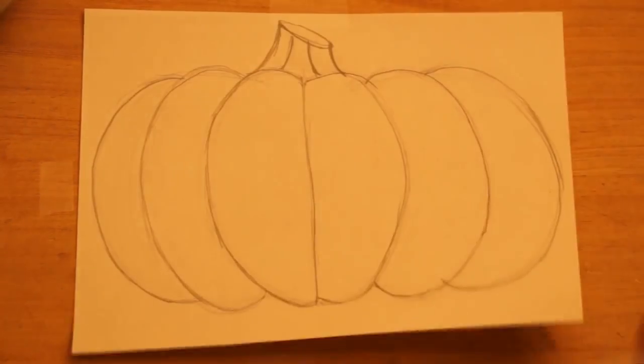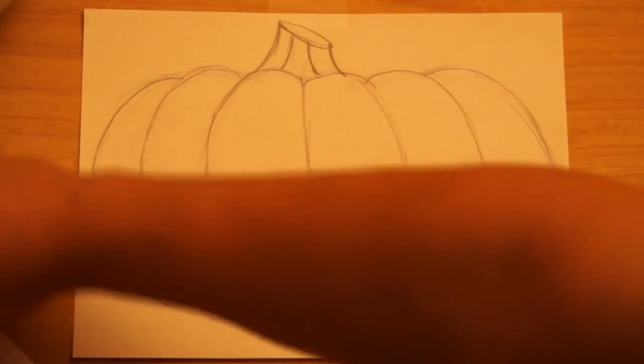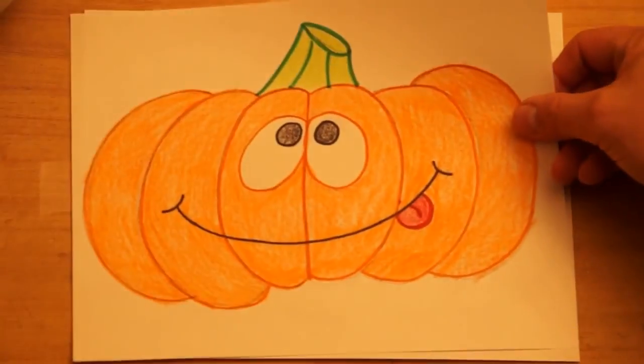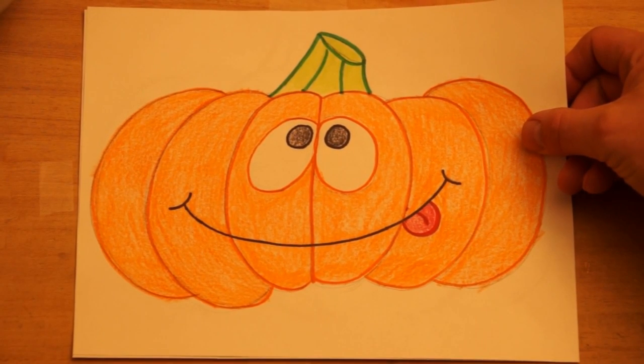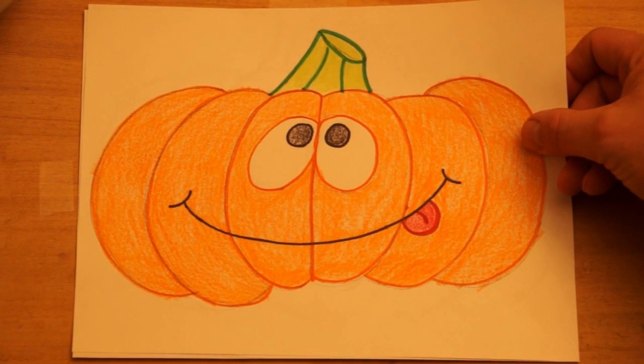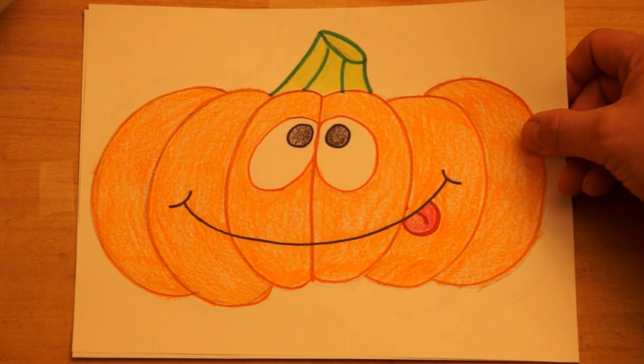You could also make up some other kind of a face that you would put on a pumpkin. Sometimes people do pumpkin painting where they just paint faces or pictures on the pumpkin. So here, I made this look like more of a pumpkin painting. But the same idea, I outlined with marker and then I filled in with crayon.